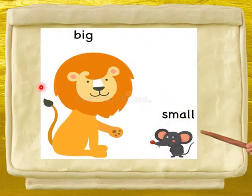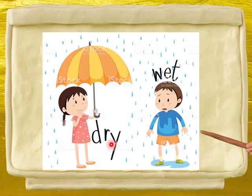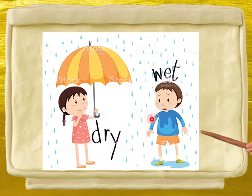Big lion. Small rat. तो big का opposite है small. Dry, wet. आप देखो बच्चों, यहाँ पर यह girl है जो umbrella लेकर खड़ी है, इसलिए यह rain में भीग नहीं रही है. और यह boy तो पूरा भीग गया. तो girl कैसी है? Dry है. और boy कैसा है? बिल्कुल wet.